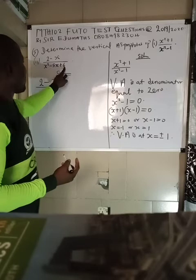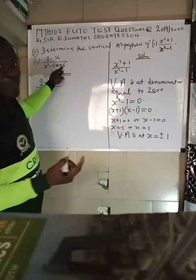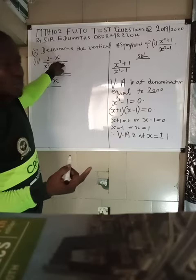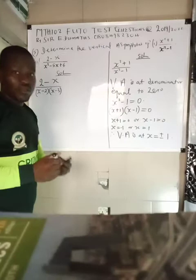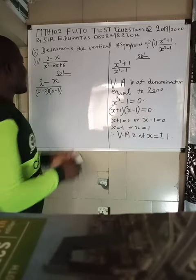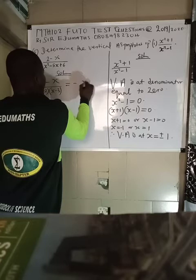From here what we have is (2 - x) over... To factorize this, we look for two numbers that can multiply themselves to give us this one and will give us -5x automatically. That is -2 times -3, which will give us positive 6. So this can be factorized to (x - 2)(x - 3). That is the factor. So we have factorized the denominator. Now watch out: this is x - 2 and this is 2 - x. So we can just effect this by minus and write it as -(x - 2).